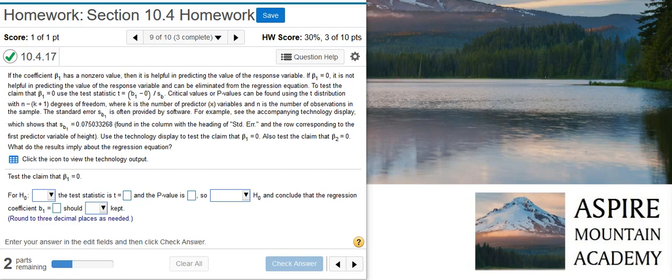The standard error, s sub b1, is often provided by software. For example, see the accompanying technology display, which shows that s sub b1 equals 0.075033268 found in the column with the heading of standard error and the row corresponding to the first predictor variable of height. Use the technology display to test the claim that beta1 equals zero. Also test the claim that beta2 equals zero. What do the results imply about the regression equation?